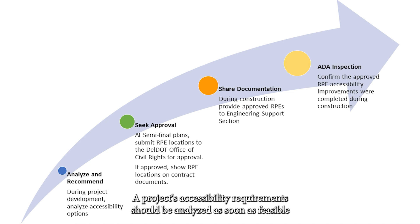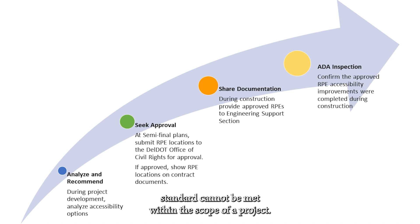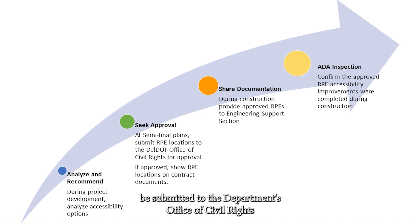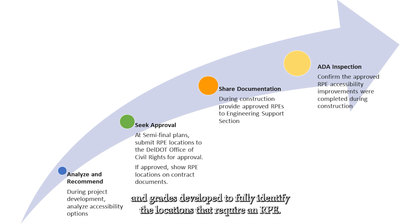A project's accessibility requirements should be analyzed as soon as feasible during the project development process to identify, mitigate, and ultimately document locations where the applicable accessibility standard cannot be met within the scope of a project. It is the Department's goal that all RPE locations be submitted to the Department's Office of Civil Rights by the semi-final plan submission milestone. Contracts at this stage will have sufficiently defined scopes and grades developed to fully identify the locations that require an RPE.